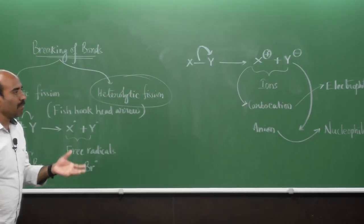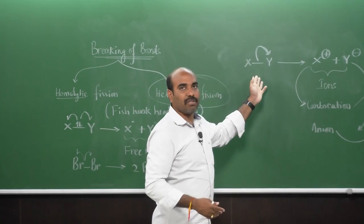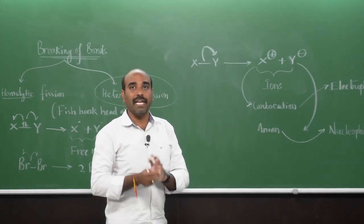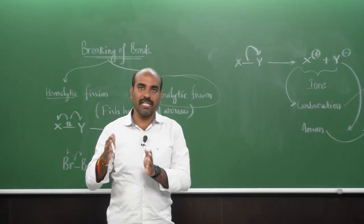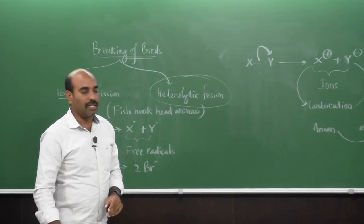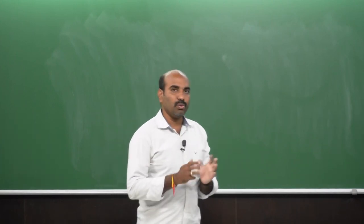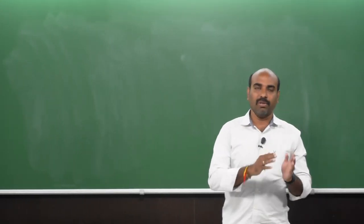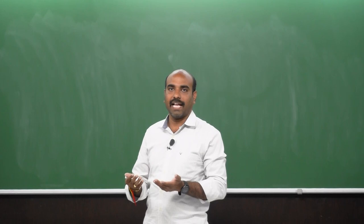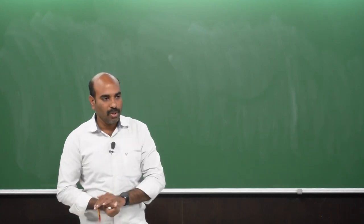The reverse of bond breaking — combination — results in bond formation. Organic reaction mechanisms can be classified into two types: radical reactions, where radicals are generated as intermediates, and ionic reactions, where ions are generated. Organic reactions may be influenced by reactant concentration, temperature, and the nature of the solvent.